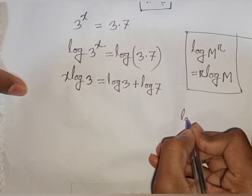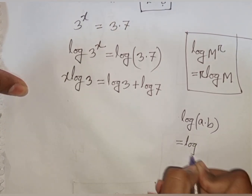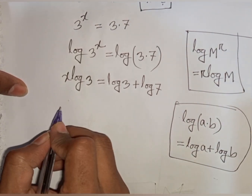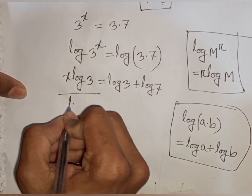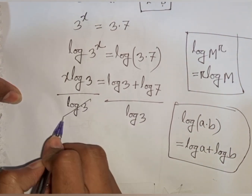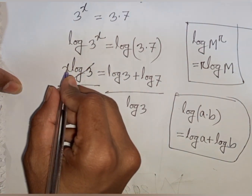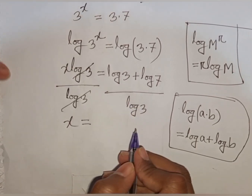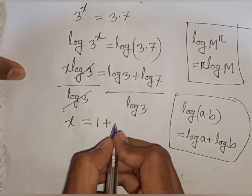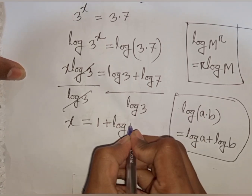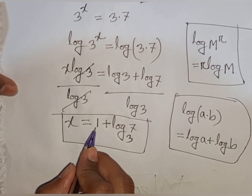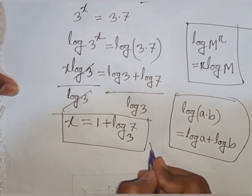According to the rule, log of a times b is equal to log a plus log b. Now we need the value of x, so divide by log 3 in both sides. We see this log 3 will be cancelled, so x will be equal to log 3 divided by log 3, that means 1, plus log 7 divided by log 3, which can be written as log 7 base 3. So x equals 1 plus log 7 base 3. This is our final answer. Thank you.